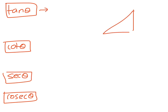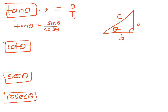So tan θ — if that is θ there, and we'll call the sides a, b, and c — tan θ in that expression is basically equal to a over b. What I want to show you is that tan θ is actually equal to sine θ on cos θ. So let's have a look at this: sine θ is equal to a on c, because that's opposite on hypotenuse.